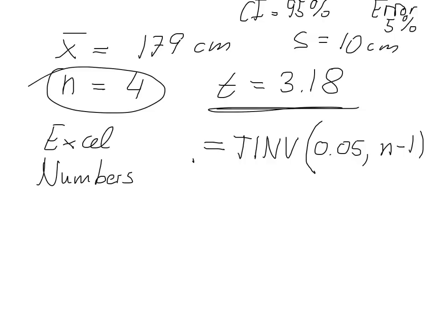So in our case, the equation would look like TINV 0.05, 3, because we've got a sample size of 4. So 4 minus 1 gives us 3, and this gives us the value of 3.18.